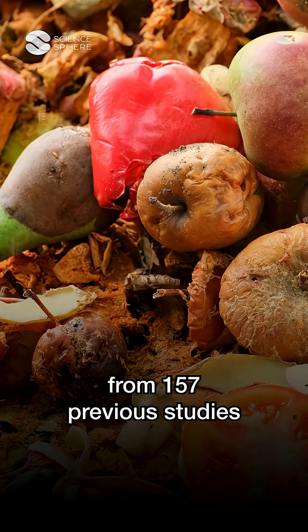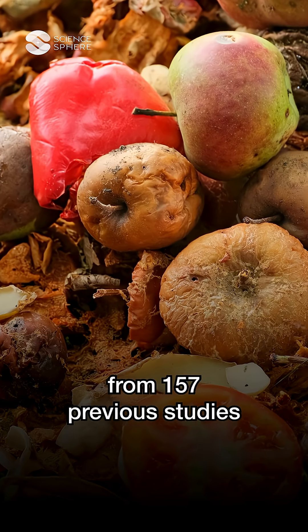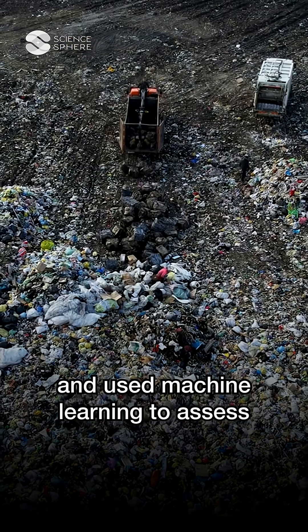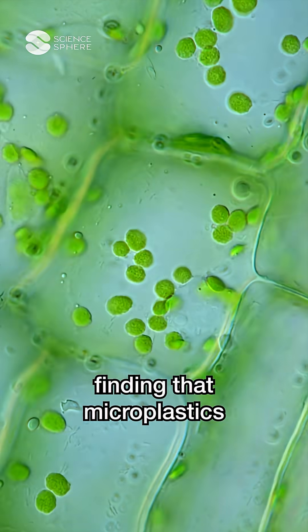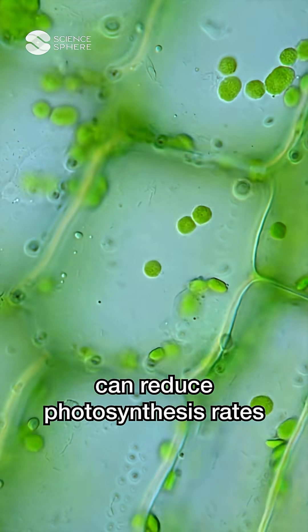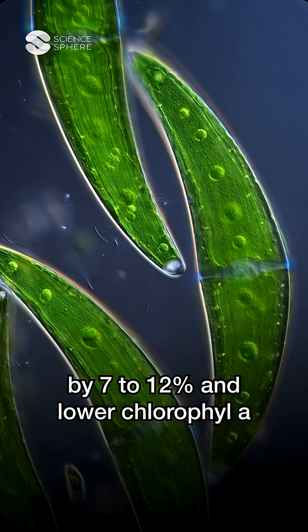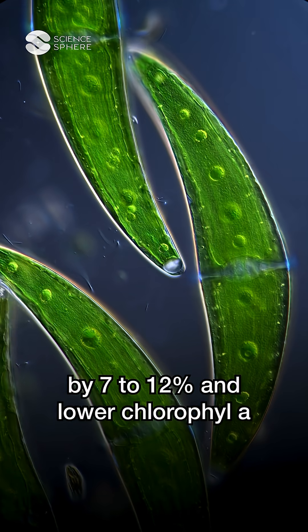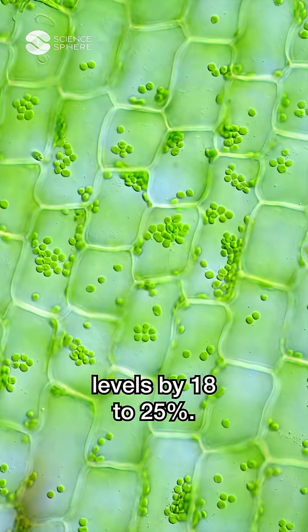Researchers analyzed data from 157 previous studies and used machine learning to assess the global impact, finding that microplastics can reduce photosynthesis rates by 7 to 12 percent and lower chlorophyll A levels by 18 to 25 percent.